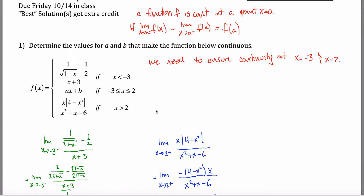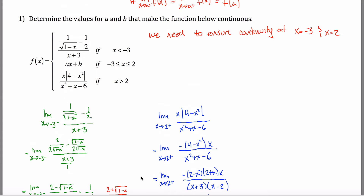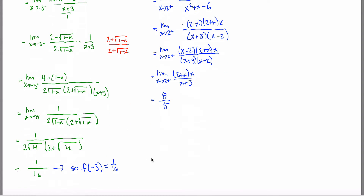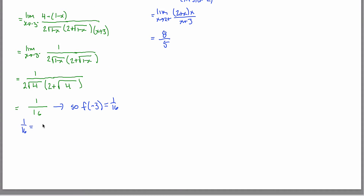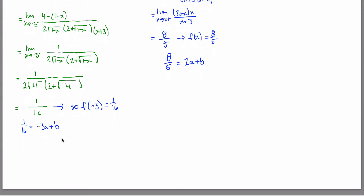So f(−3) must equal 1/16 for continuity. Since f(−3) = a(−3) + b = −3a + b, I get the equation −3a + b = 1/16. Also, f(2) must equal 8/5, and f(2) = a(2) + b = 2a + b, giving 2a + b = 8/5. So I have a system of two equations in a and b.